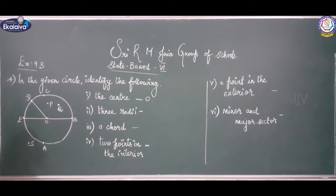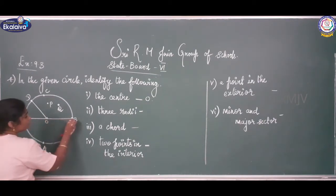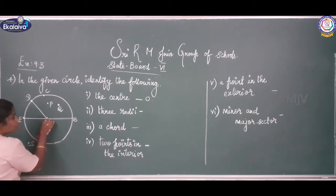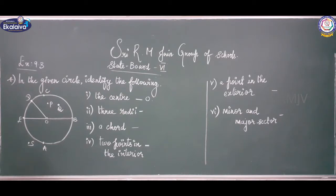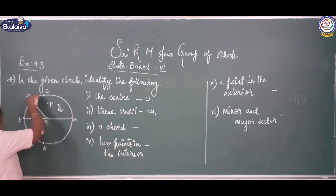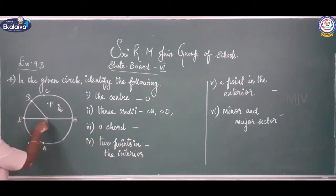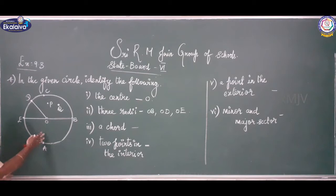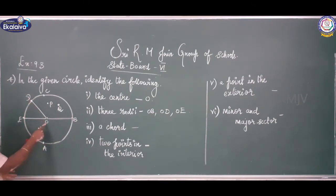When you draw with a compass, there is a hole while you are drawing - that hole is the centre of the circle. From the centre all radii are equal distance. I am going to write 3 radii: from the centre O to the circumference. So OB, OD, and OE are the three radii.